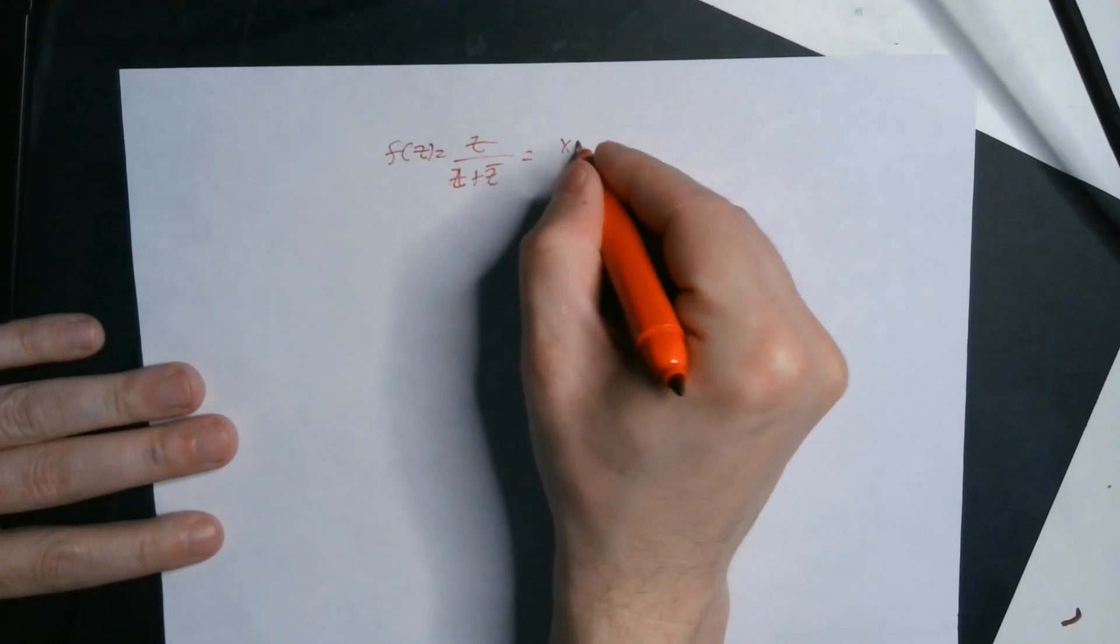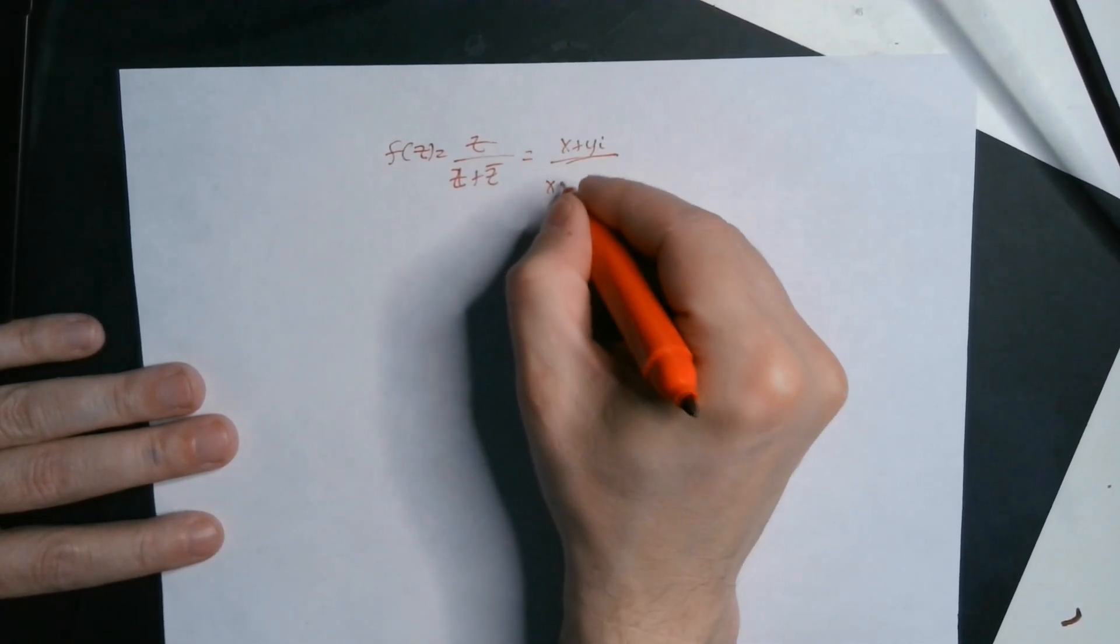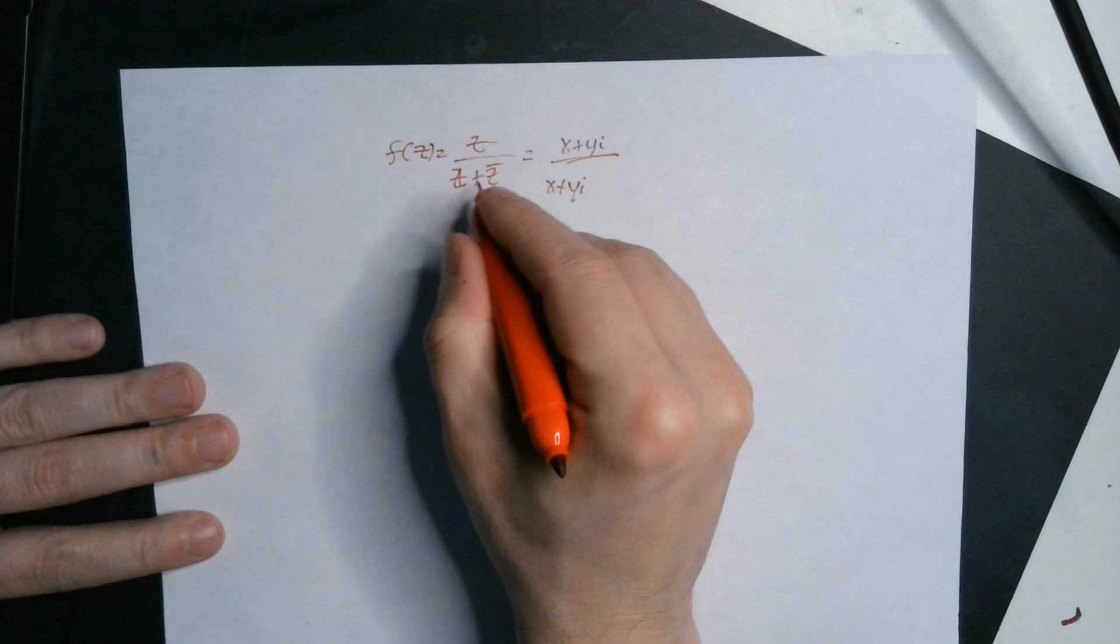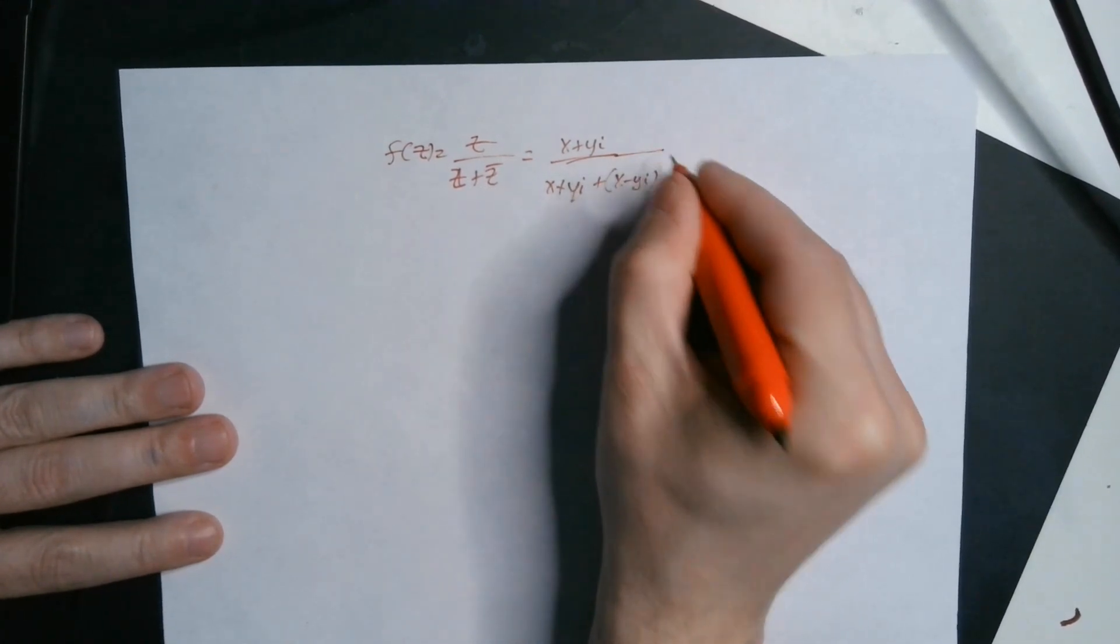So we write this as x plus yi over z. So it's like x plus yi and then plus z bar, so plus x minus yi because that's the conjugate.